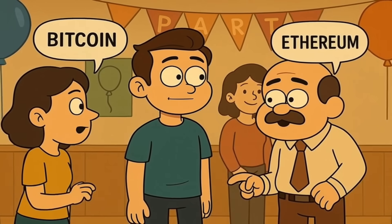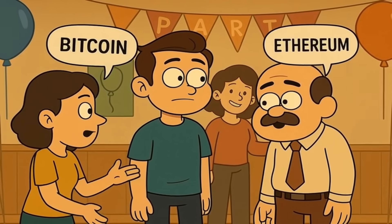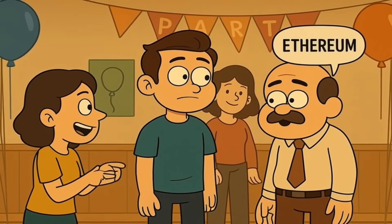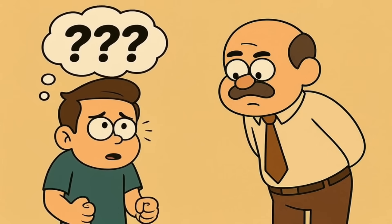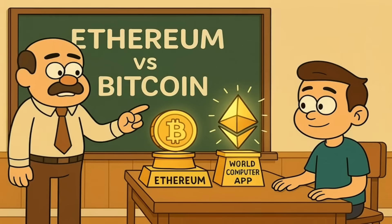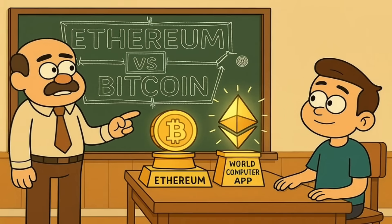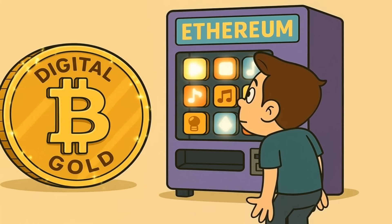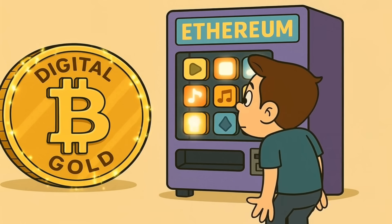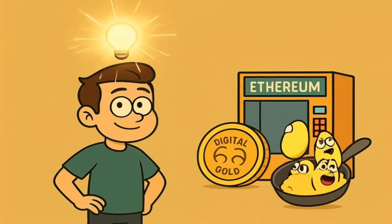Alright, let's be honest. You've been hearing words like Bitcoin and Ethereum thrown around for years, and you just nod and smile, pretending you know what's going on, hoping that nobody asks you to actually define them. Today, I'll explain Ethereum and how it's different from Bitcoin to you like you're five years old, and by the end of this, you'll finally understand why one is like digital gold and the other is like a giant unstoppable vending machine for the internet, and you'll be able to explain it without your brain turning into scrambled eggs.